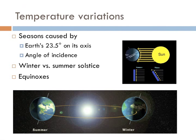Seasons are caused by the Earth's natural tilt on its axis, known as its angle of incidence. In the northern latitudes, the Earth is tilted closer toward the sun in the summer months and further away in the winter months, which determines our seasons. That is why up north it is cold in the winter and warm in the summer, and the opposite is true in the southern latitudes — their summer is our winter, and their winter is our summer.